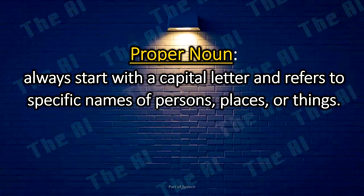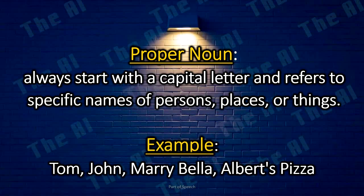Proper nouns always start with a capital letter and refer to specific names of persons, places, or things. Examples: Tom, John, Mary, Bella, Albert's Pizza.